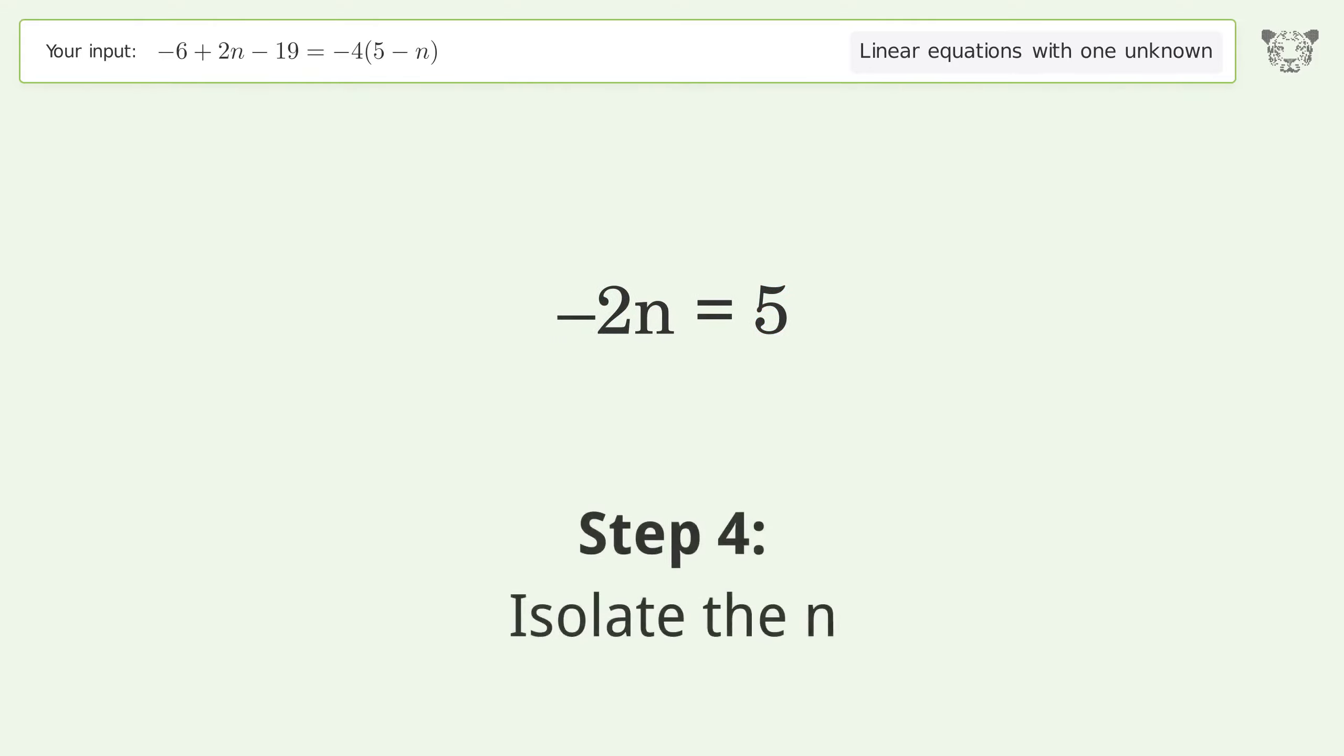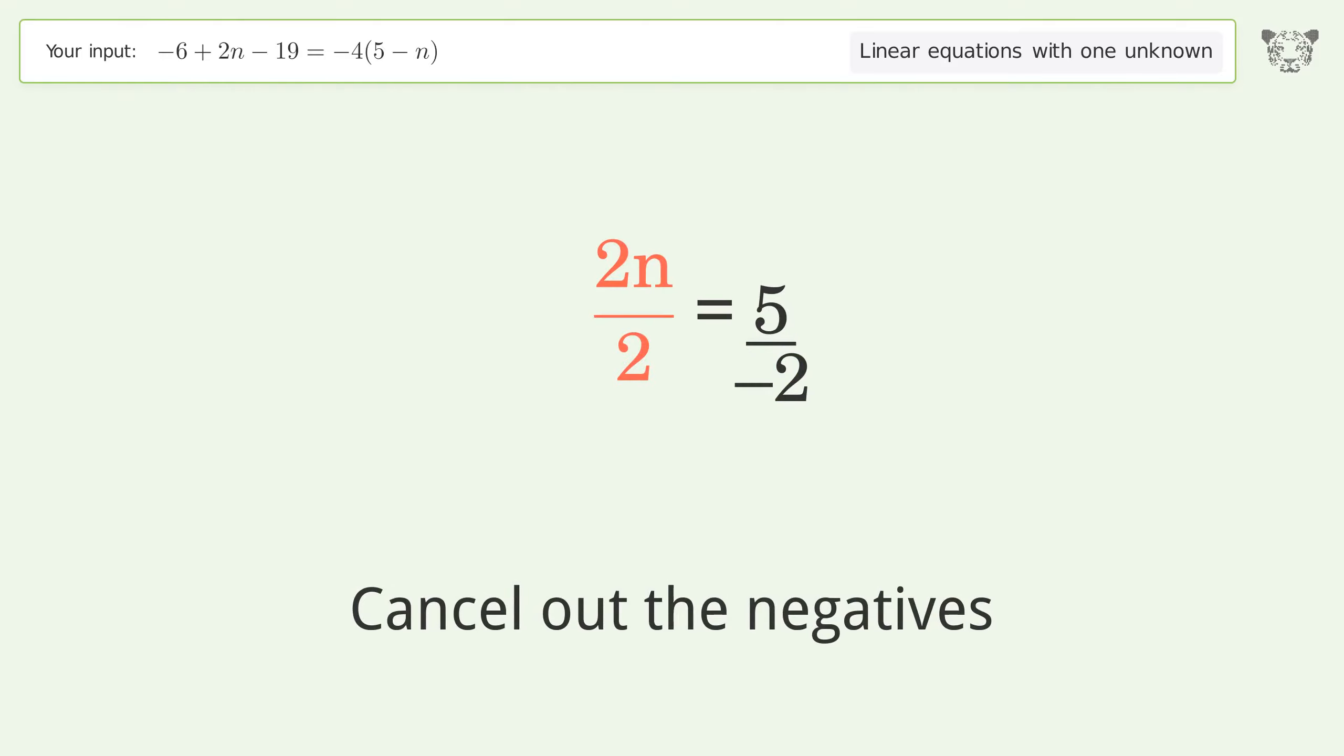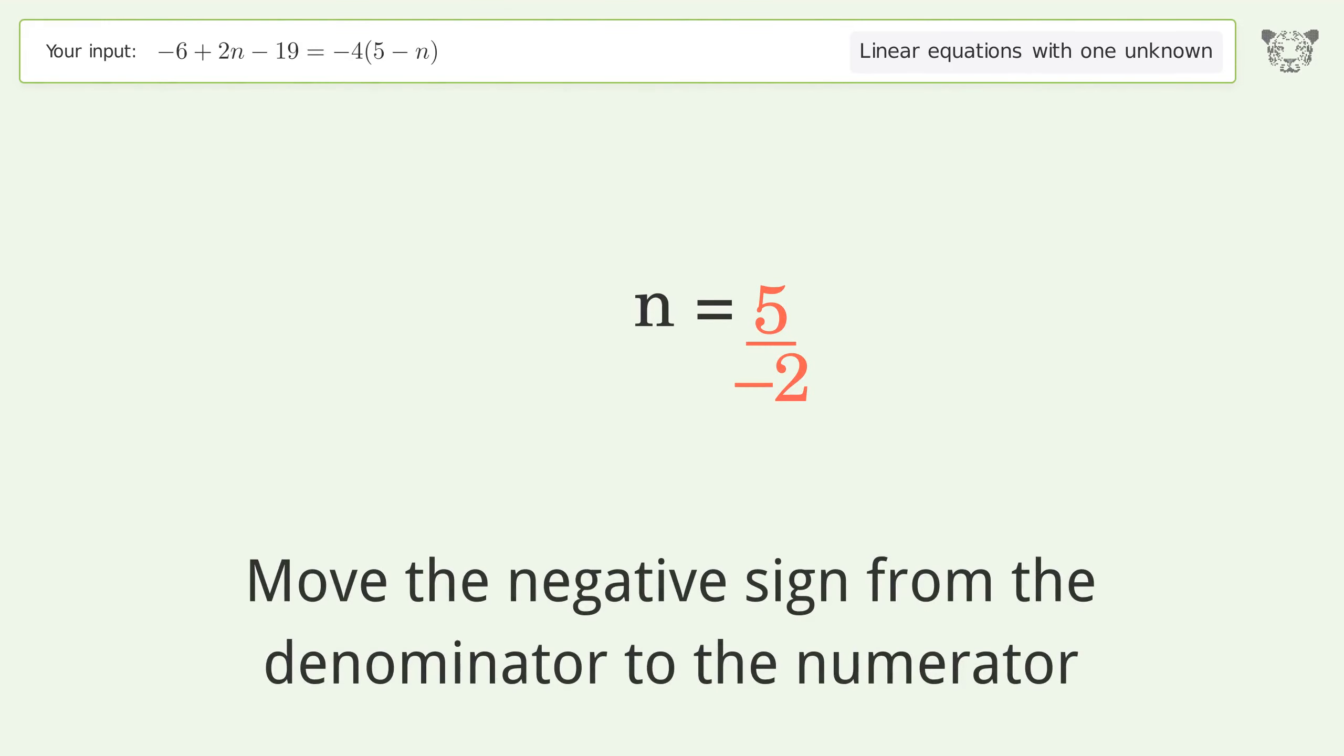Isolate the n. Divide both sides by negative 2. Cancel out the negatives. Simplify the fraction. Move the negative sign from the denominator to the numerator.